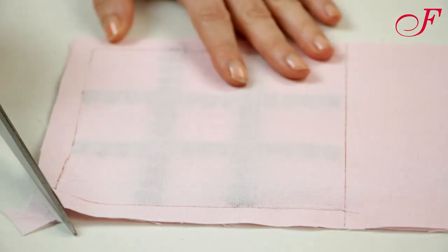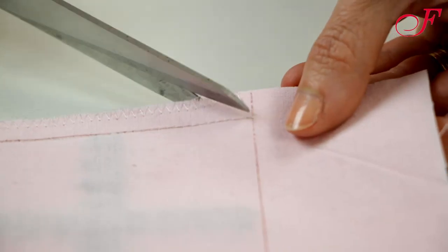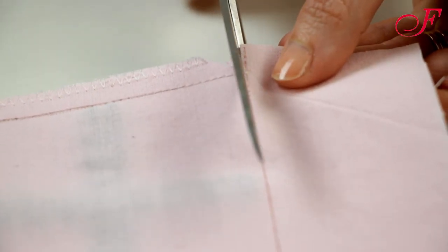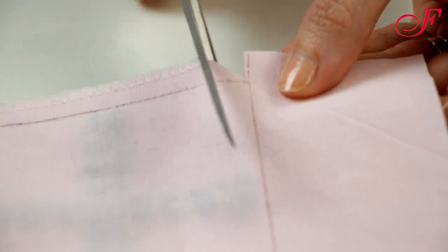Now snip the bottom angles and the seam allowance this way, parallel to the pocket top and in bias to the side. To keep the fabric from fraying, you can zigzag stitch the edges.